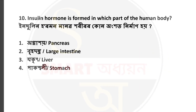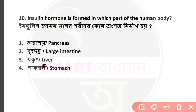Question number 10: Insulin hormone is formed in which part of the human body? This is an important question. The answer is the pancreas — insulin hormone is produced in the pancreas. Option number 1 is correct.